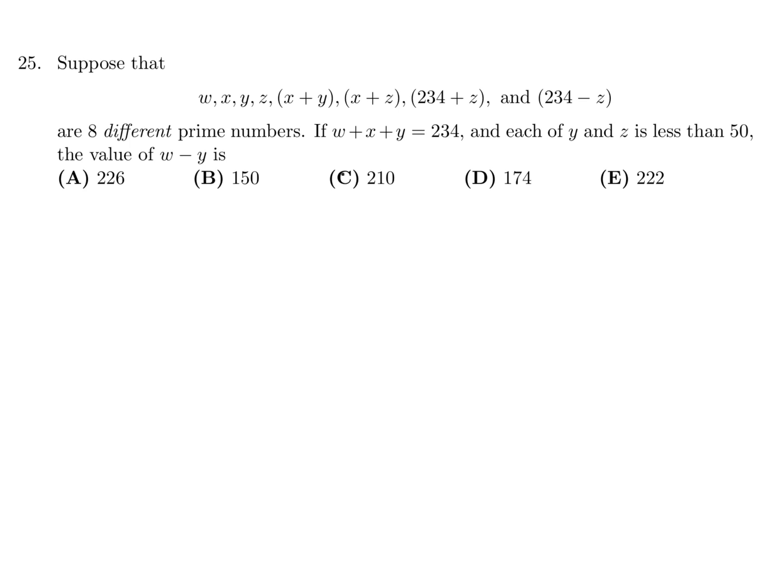Suppose that W, X, Y, Z, X+Y, X+Z, 234+Z, and 234−Z are eight different prime numbers. If W+X+Y = 234, and each of Y and Z is less than 50, what is the value of W minus Y?